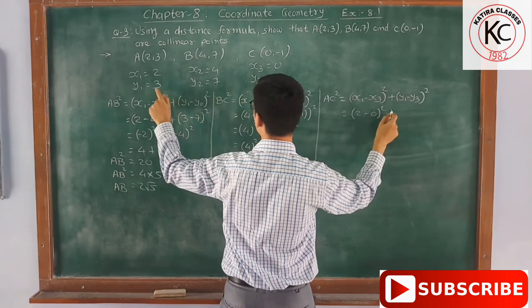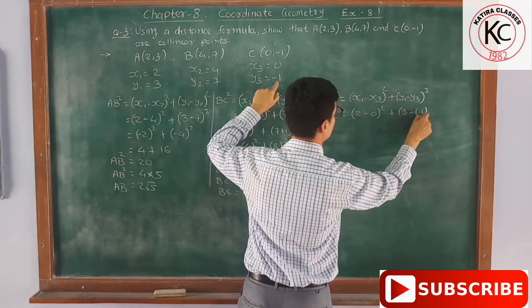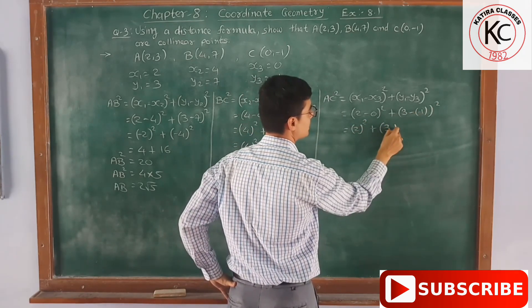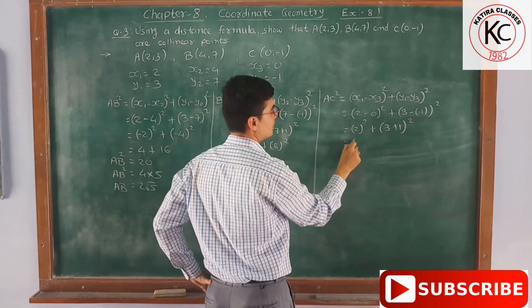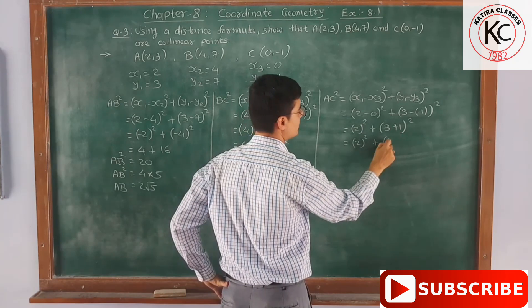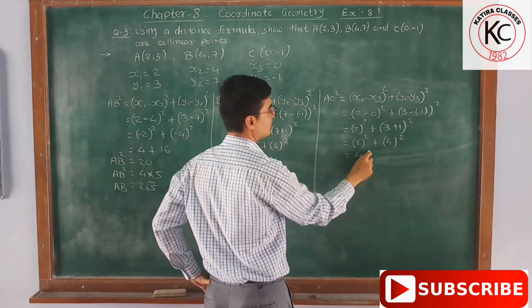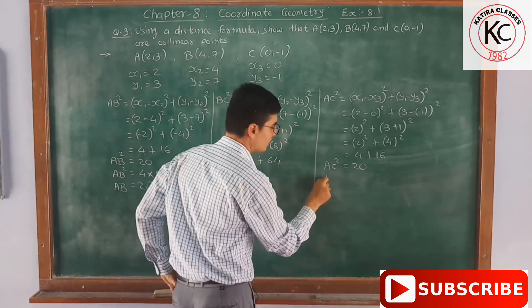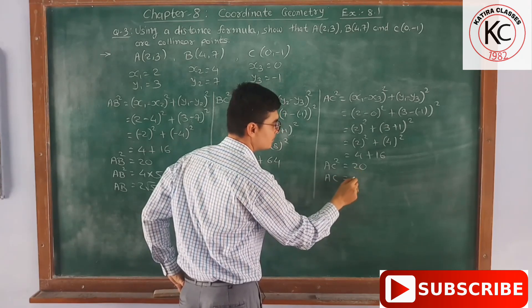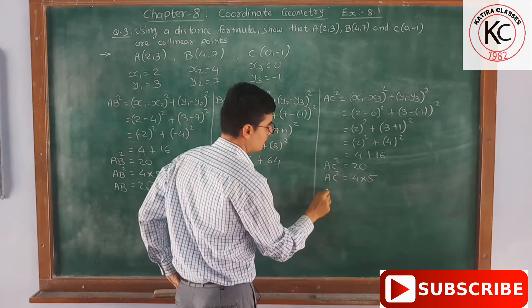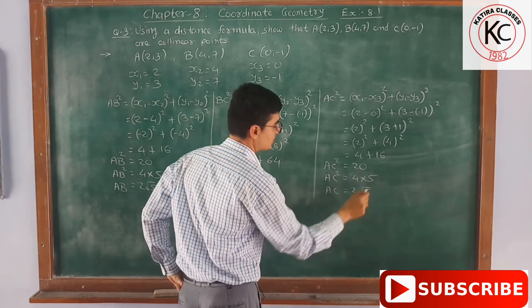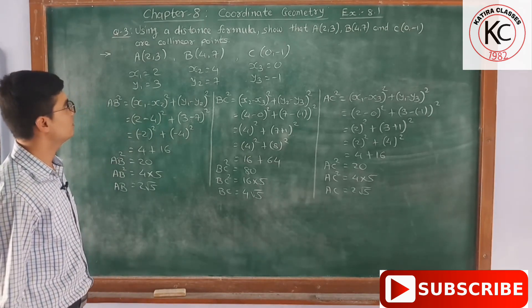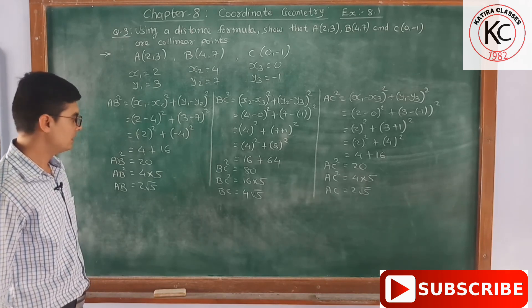In the same way, let's find AC: x1 is 2 and x3 is 0, y1 is 3 and y3 is minus 1. So (2 − 0)² + (3 − (−1))² = 2² + 4² = 4 + 16 = 20. AC² = 20, and 20 = 4 × 5, so root of 4 is 2 and root of 5 is √5. Therefore AC = 2√5.